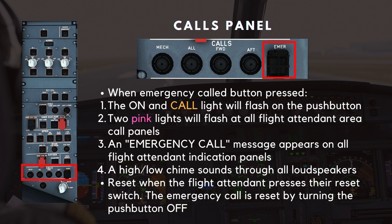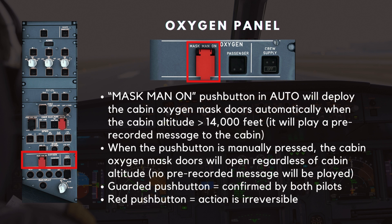These calls will be reset when the flight attendant presses their reset switch. The emergency call is reset by turning the push button off. The next section is the oxygen panel. This has some simple controls for both the passenger oxygen system as well as the flight deck oxygen. The red-guarded Mask Man On push button in its default automatic position will deploy the cabin oxygen mask doors automatically when the cabin altitude exceeds 14,000 feet, and will also play a pre-recorded message to the cabin. When the push button is manually pressed, the cabin oxygen mask doors will open regardless of cabin altitude.